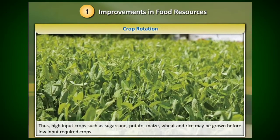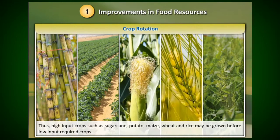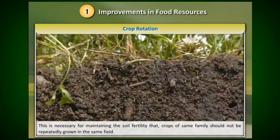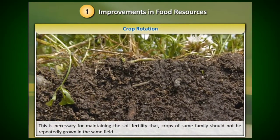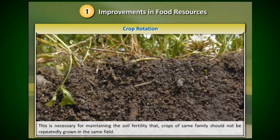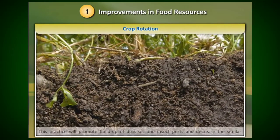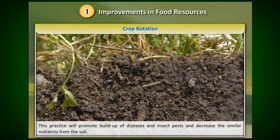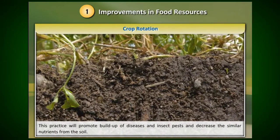High input crops such as sugarcane, potato, maize, wheat and rice may be grown before low input required crops. This is necessary for maintaining soil fertility — crops of the same family should not be repeatedly grown in the same field.